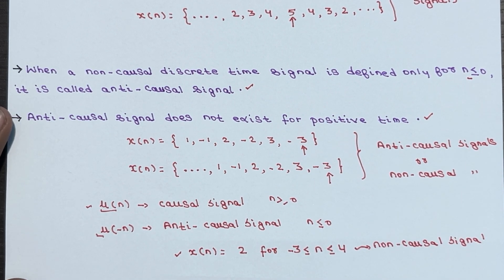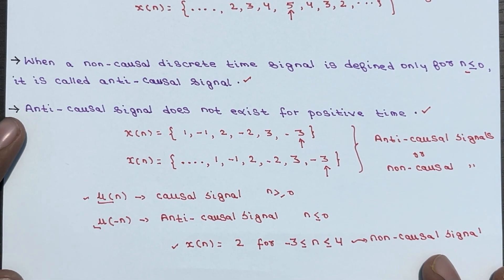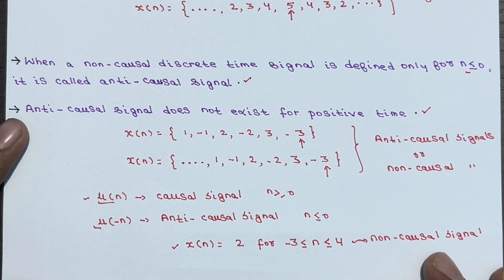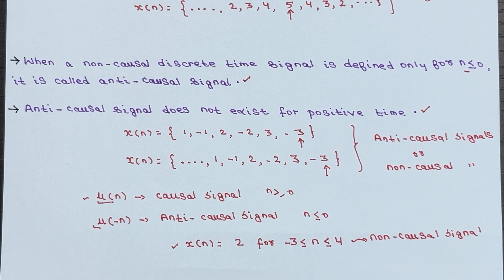One last point: a non-causal signal can be transformed into a causal signal by multiplying it with a unit step signal denoted as u of n. In the next lecture, we will see some questions based on causal and non-causal signals. If you have any doubt, you can ask in the comment section. Thanks for watching this video.